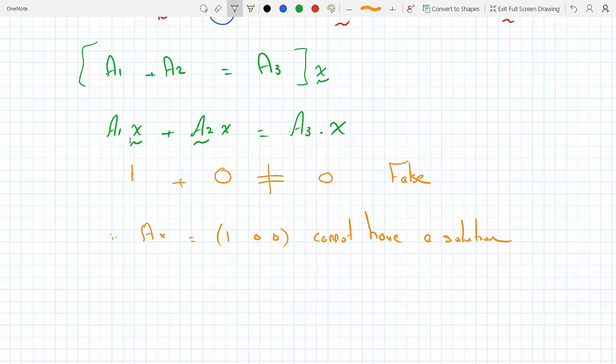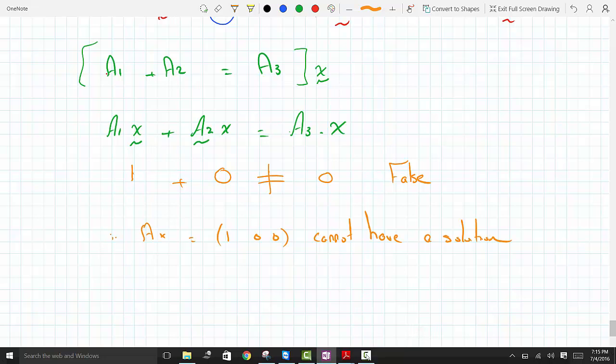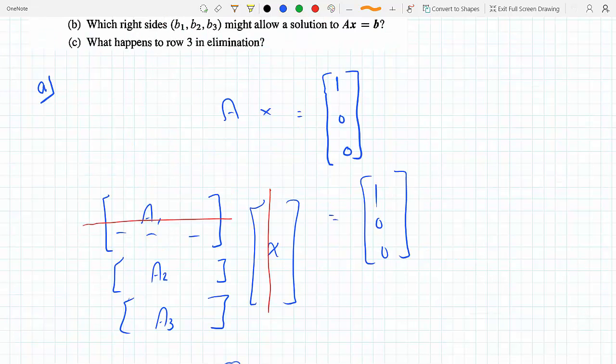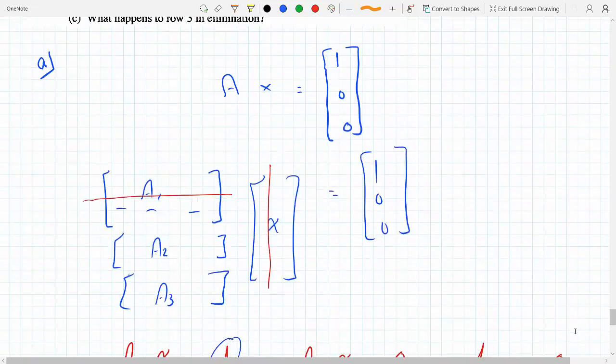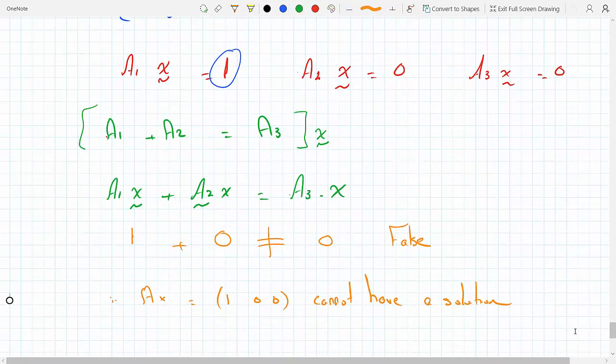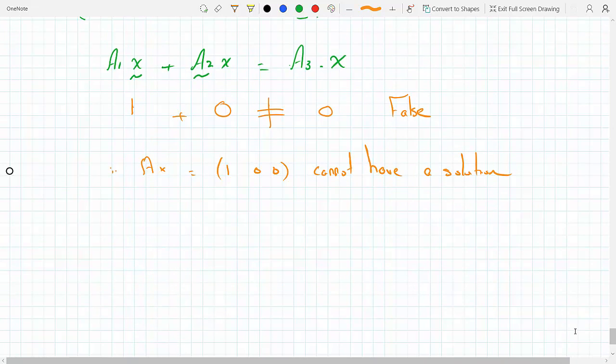That's why doing these steps. Okay, now it says which right side might allow a solution to Ax equal b? So this is part b. Ax has to equal b.